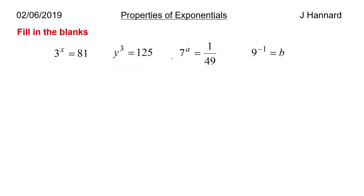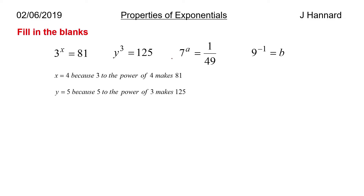So fill in the blanks. 3 to the x equals 81 — what is x? Hopefully you come up with x equals 4, because 3 to the power of 4 makes 81. What about y cubed equals 125? Well y must be 5, because 5 to the power of 3 makes 125.